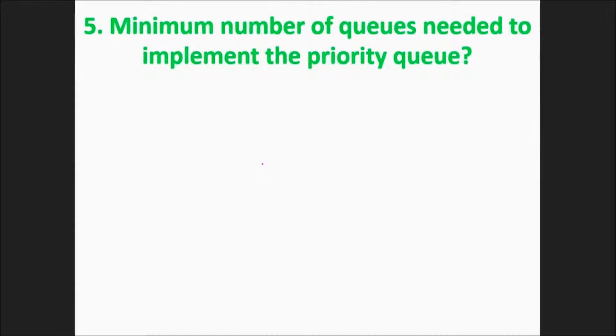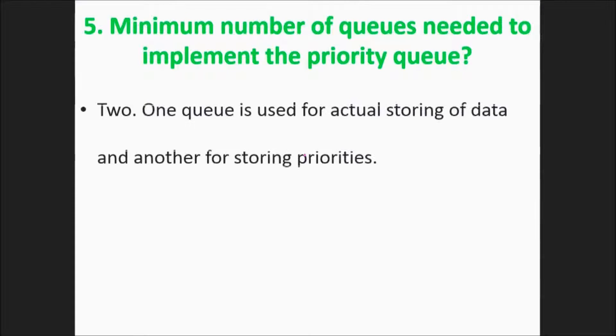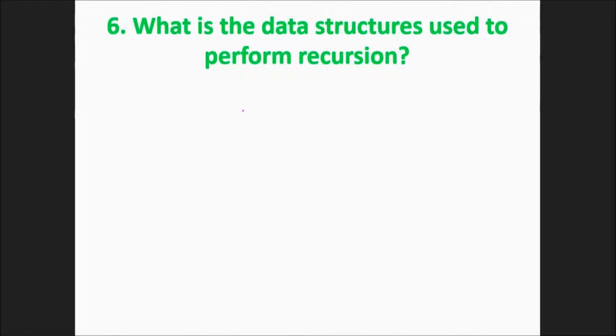Minimum number of queues needed to implement a priority queue: what are the minimum number of queues would you require to implement a priority queue? The answer is two. One queue is actually used for storing the data and another for storing priorities.